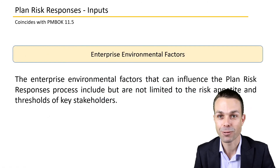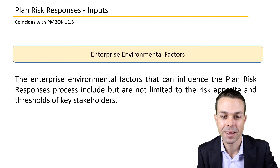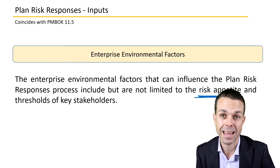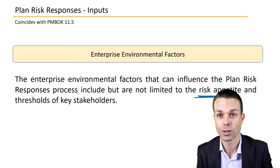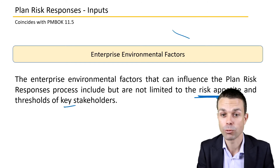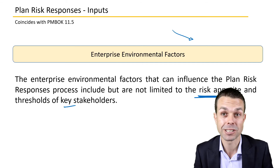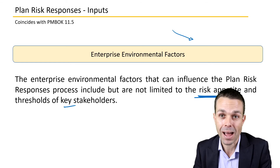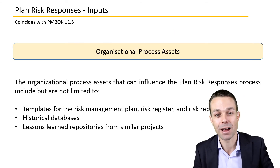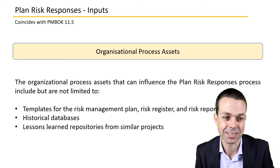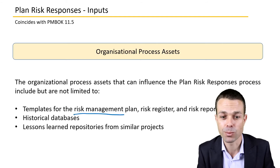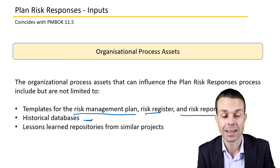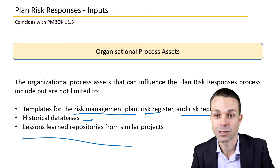Enterprise environmental factors include the environment we're operating in — in particular, the overall risk appetite and thresholds of key stakeholders. If there is a low risk threshold, we may need to do serious work when planning risk responses to bring those risks back under control. Organizational process assets include templates for the risk management plan, risk register, or risk report, as well as historical databases and lessons learned repositories from similar projects.